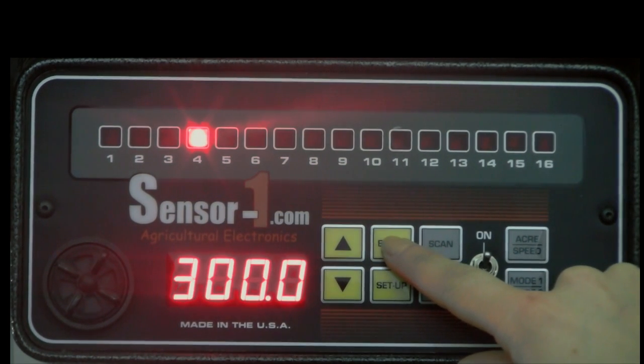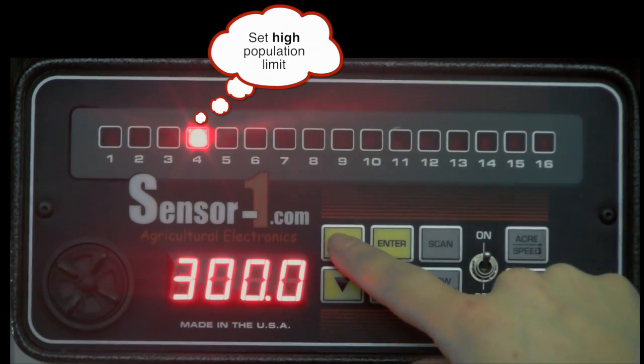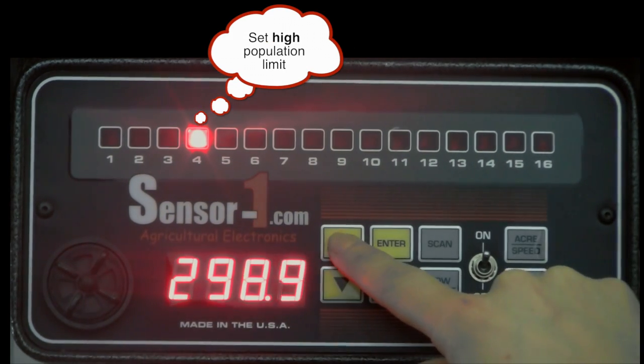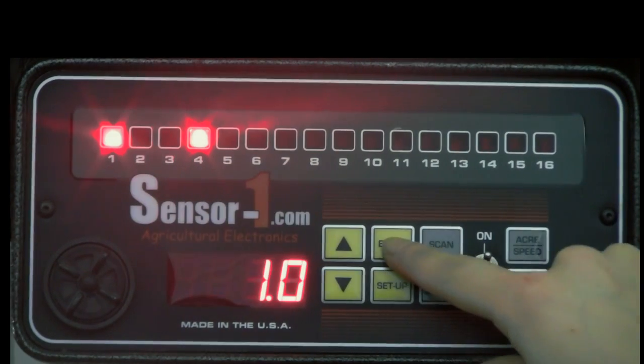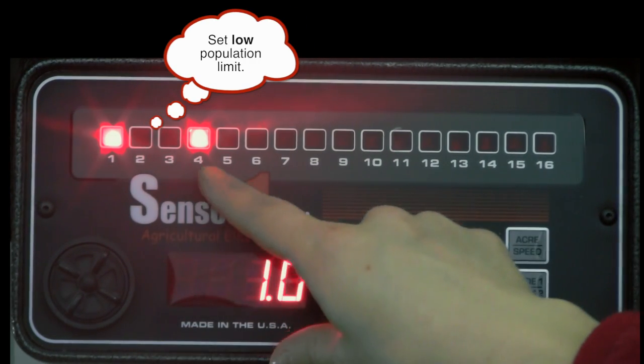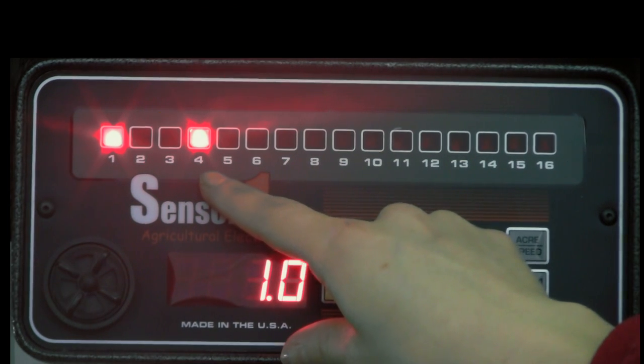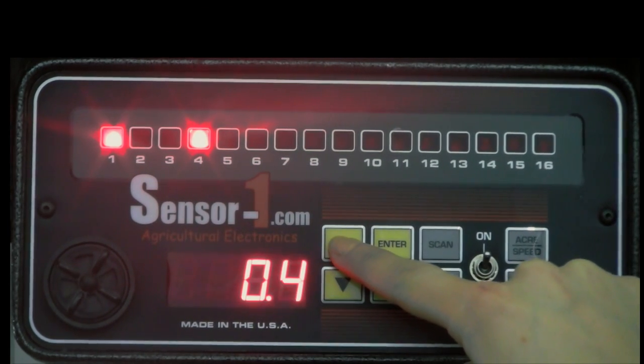Now the light over row number 4 will come on. This is where you can set up your high population limit using the arrow keys and then press enter to move on. Lights over rows 1 and 4 will come on for you to set your low population limit. Again, use the arrow keys to adjust and press enter.